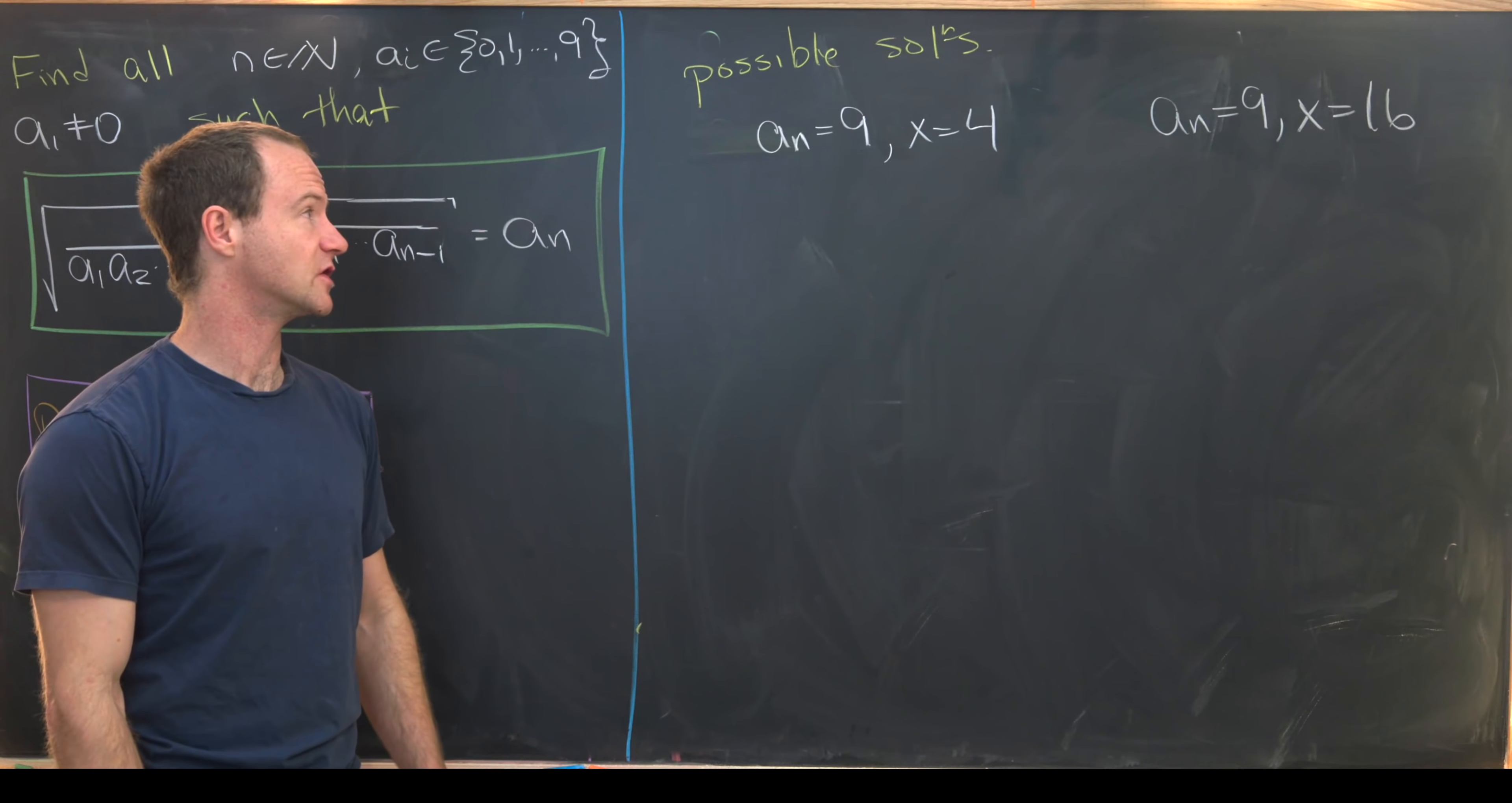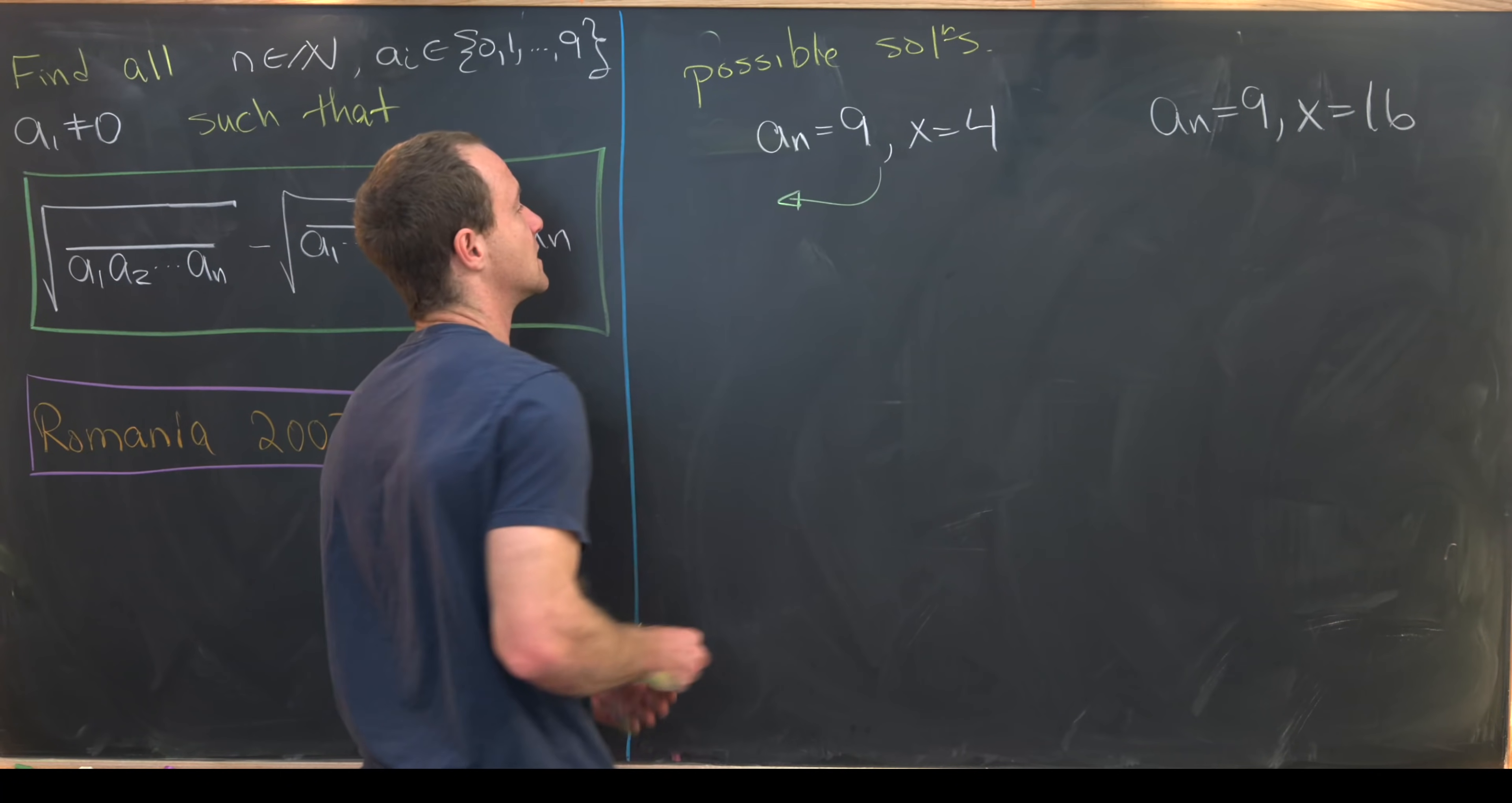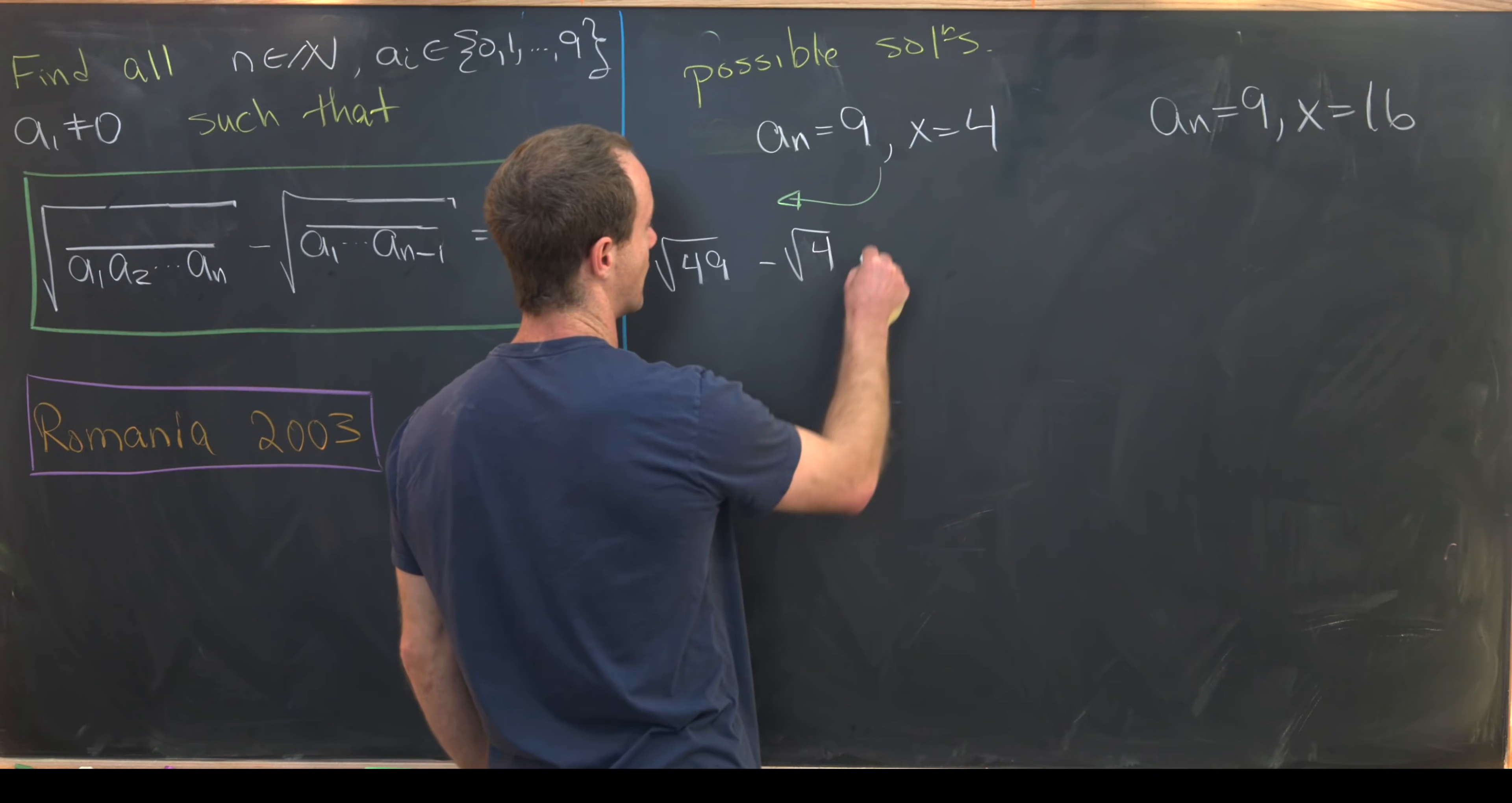To this point, we've determined that there are two possible solutions. So this number an can only be equal to 9, but x could be 4 or 16. And now let's check each of those. So recall that x was this number right here. So this number in this first square root is x with the additional digit of an at the end. So this corresponds to the square root of 49 minus the square root of 4.